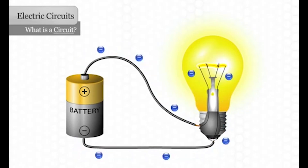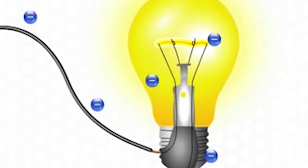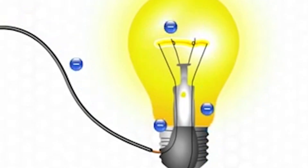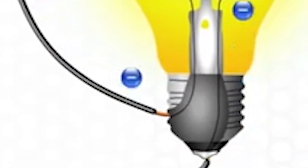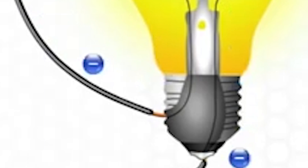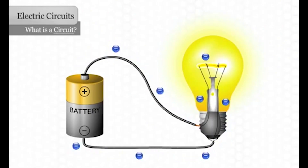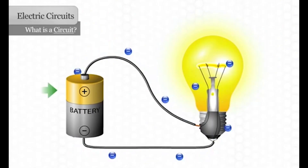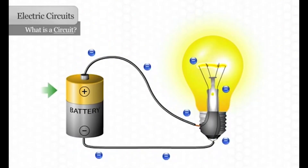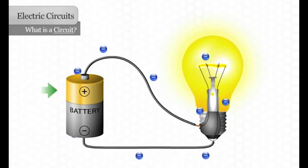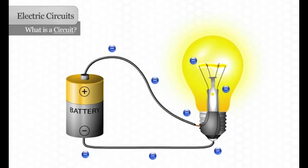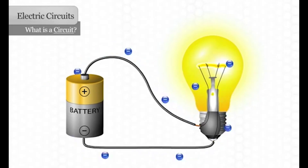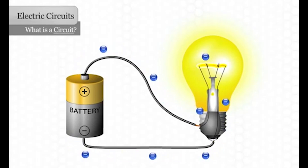When the electrons go through the filament, some of the electrical energy is changed into heat energy and light energy. Then the electrons flow down to another wire inside the bulb and to another conductor on the base. Finally, the electrons make their way to the positive side of the battery. If they don't, there won't be a complete circuit and the bulb will not light up.